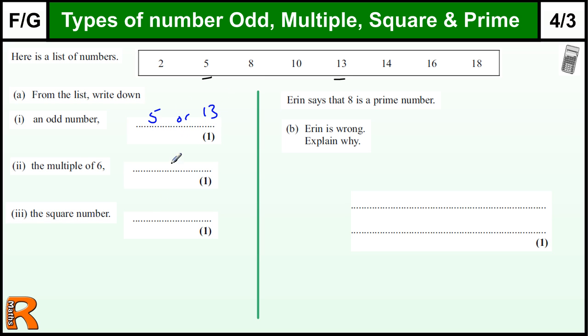I'm a multiple of six. The multiples of six are 6, 12, 18, 24, and so on - so just the six times table - and there's 18 as our multiple of six.